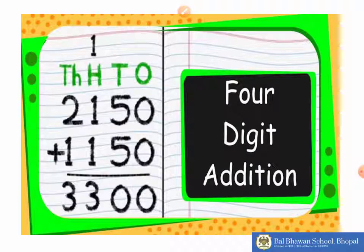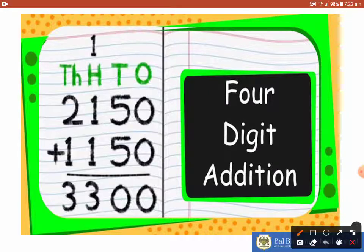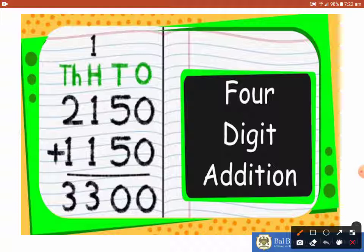Let us practice some questions based on addition. In this question, we have to add the two given numbers that is 2150 and 1150. We should always start doing addition starting from one's place. So when you are going to add one's place here, 0 plus 0 gives you 0.